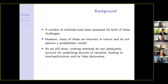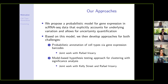A number of methods have already been proposed for both of these challenges, but many are heuristic in nature and don't assume an underlying probabilistic model. We find that many existing methods don't adequately account for underlying sources of variation, which can lead to misclassifications in the cell type annotation context and false discoveries in the unsupervised clustering context. We propose a probabilistic model for gene expression that explicitly accounts for underlying variation and quantifies uncertainty.